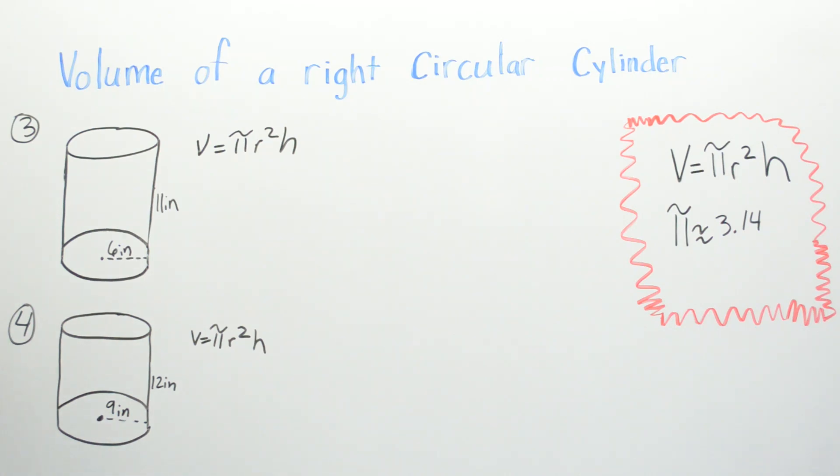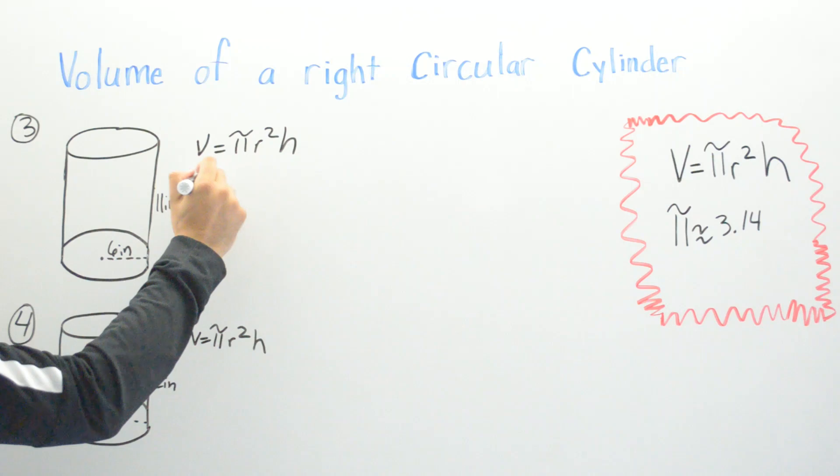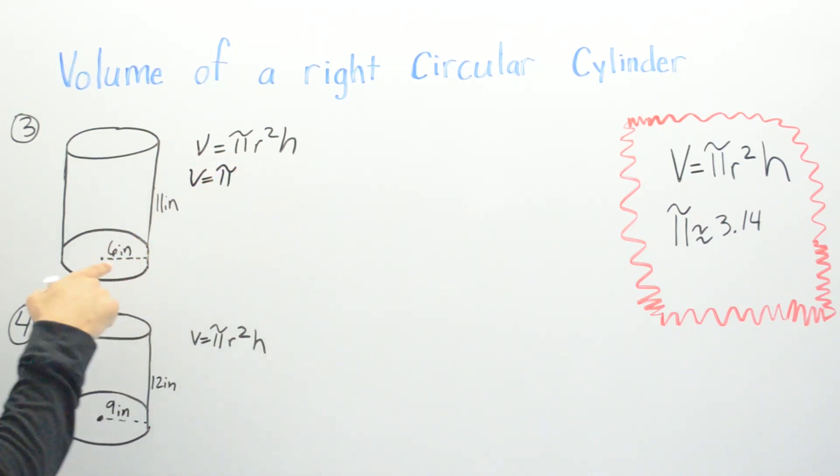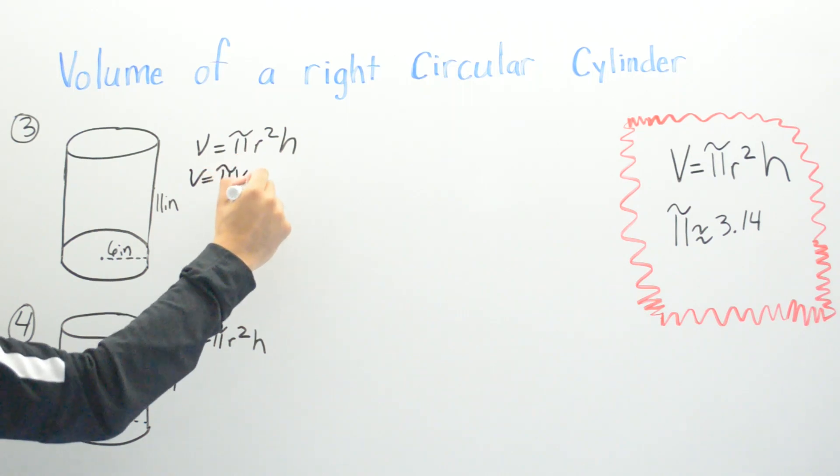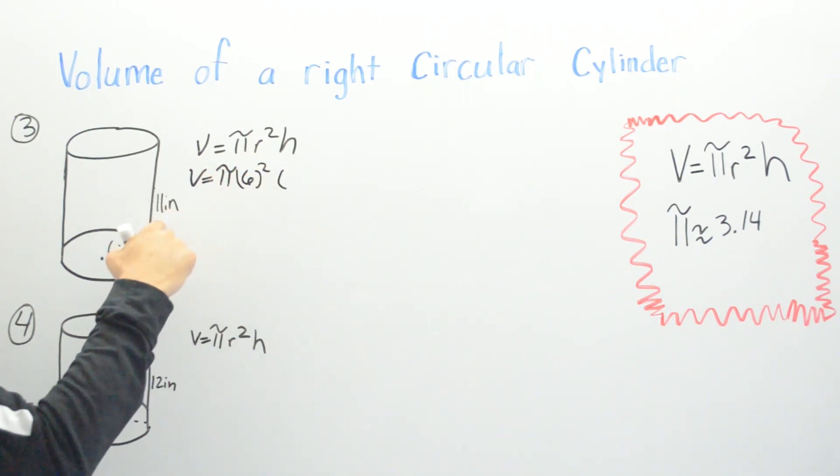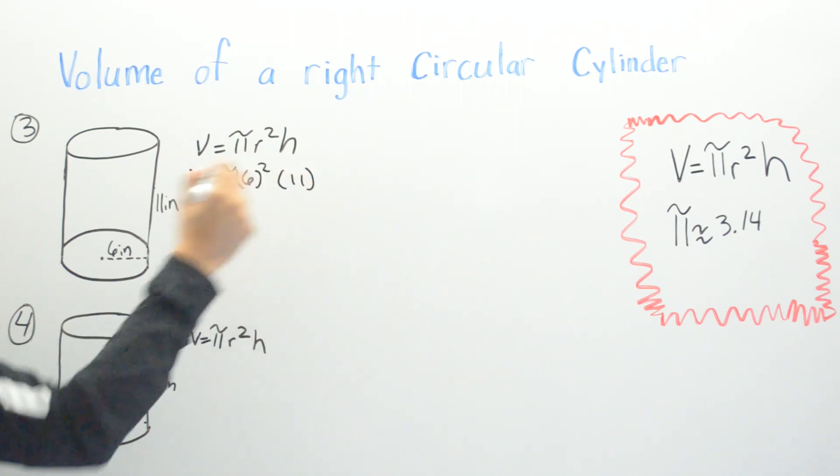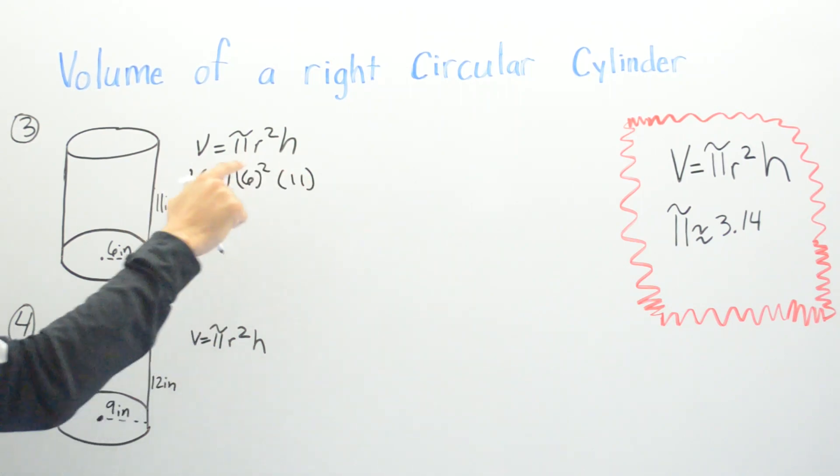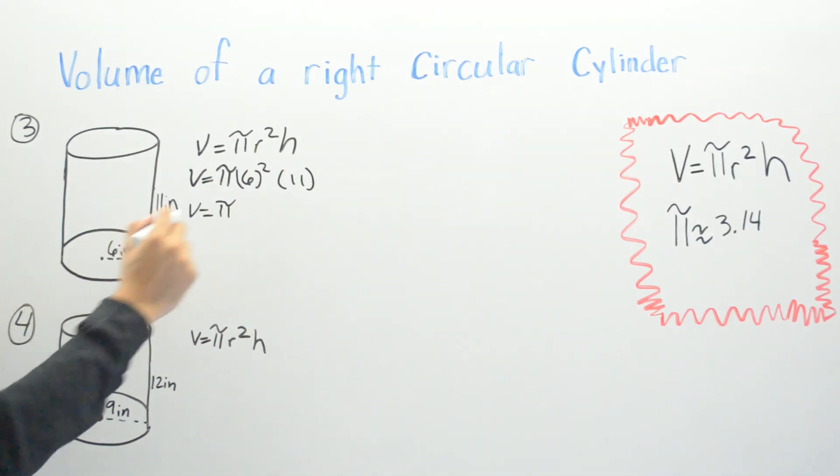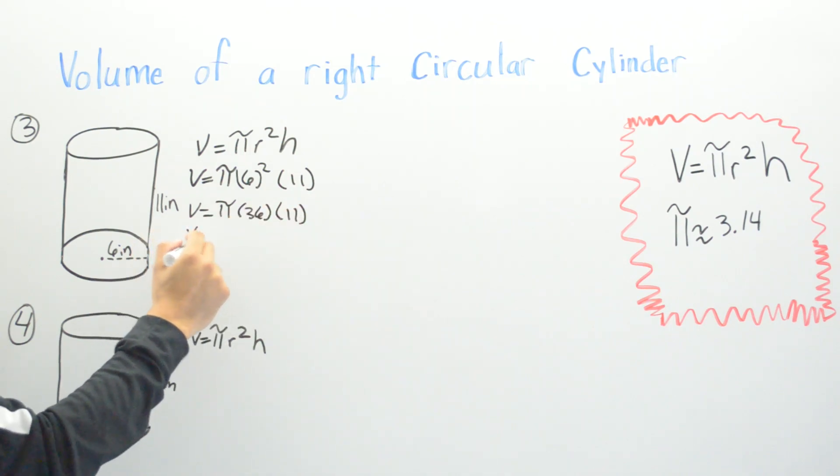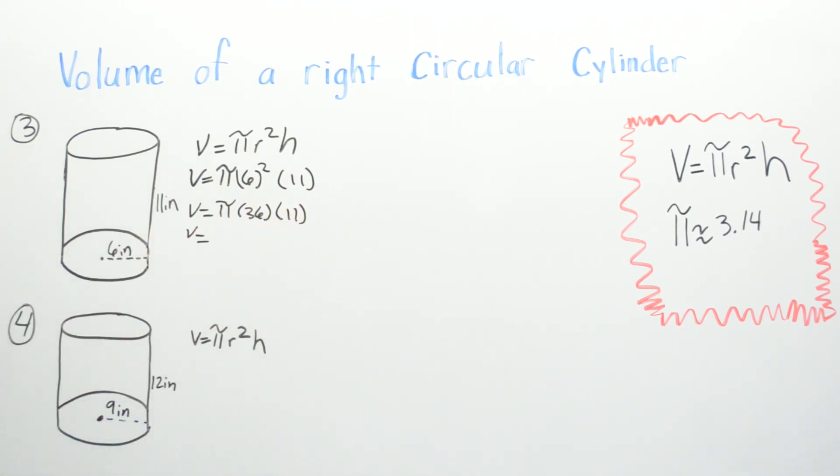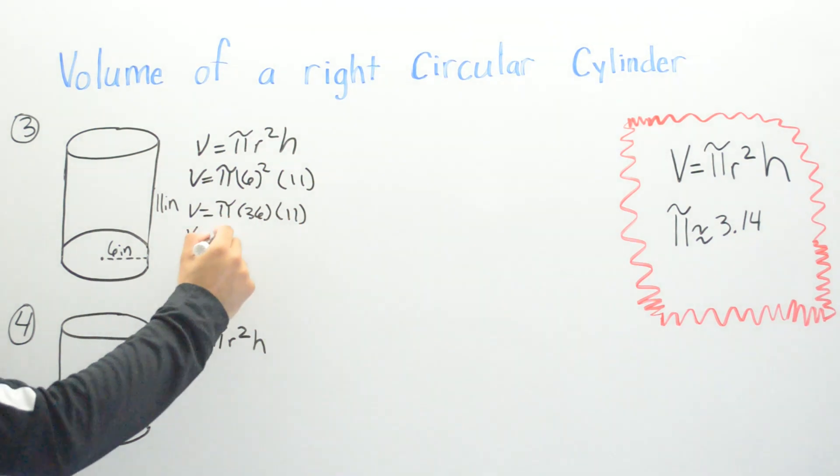All we have to do now is plug in your numbers. V equals pi, what is your r? R is 6, squared, times our height which is 11. V equals pi, and 6 times 6 is going to be 36 times 11. Then we go ahead and multiply 36 times 11 which is 396 pi.